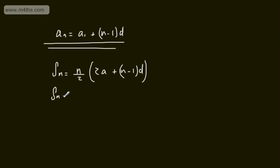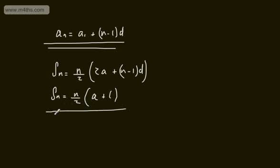Another way we can write this is n over 2, times a plus l, where a is the first term and l is the last term.